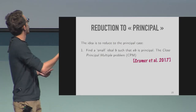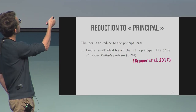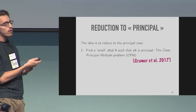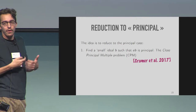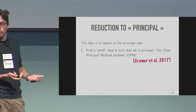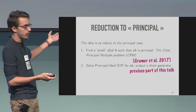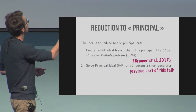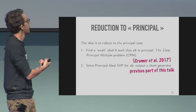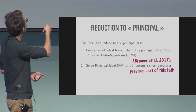What is done in Cramer et al. 2017 is: you find a small ideal B such that the product AB is principal. Since B is small, this product AB is in some sense close to A — it's A times something small — and it's principal, so we call AB a close principal multiple. Once you have that, you use the previous part: you find a short generator in this principal ideal AB, and this short generator is also a short vector in A.